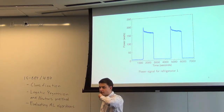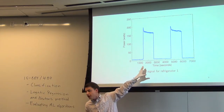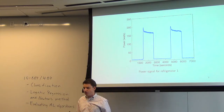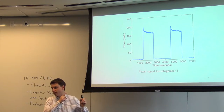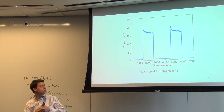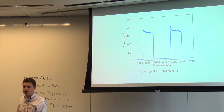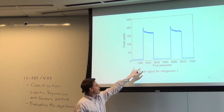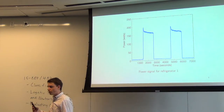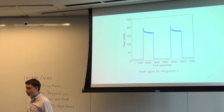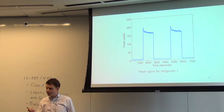This refrigerator signal looks somewhat unique: both in terms of the total power consumed — about 150 watts — and the length of time it stays on. As a whole, these characteristics give you a pretty good sense of what the device is. If you see something like this, you can make a pretty good guess that it's going to be a refrigerator.